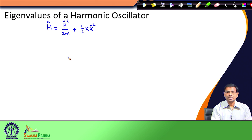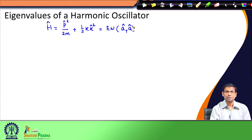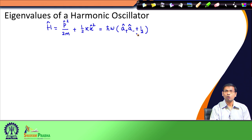We also discussed that instead of using the linear momentum and the position operator, we can express these two operators in terms of two new operators that we call step-up or step-down operators. We can express this Hamiltonian as ℏω(a⁺a⁻ + ½), where a⁺ is the step-up operator and a⁻ is the step-down operator. This is the new form of the Hamiltonian operator.